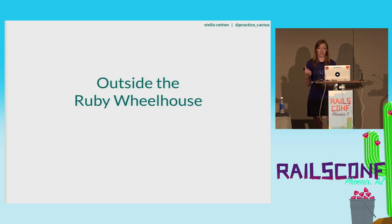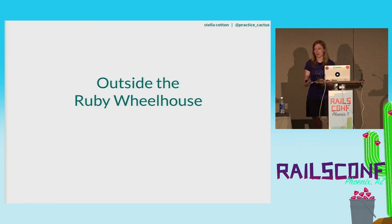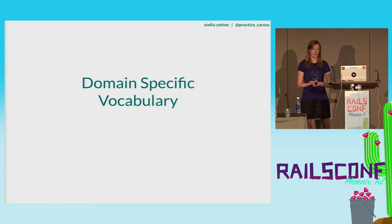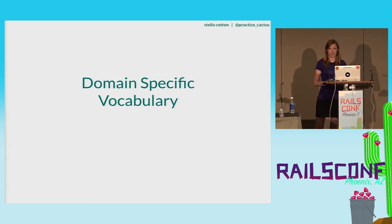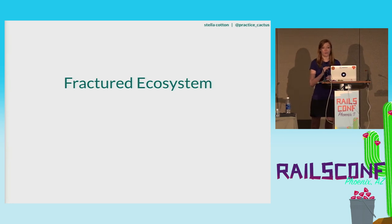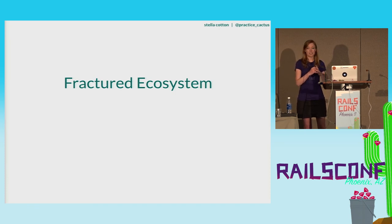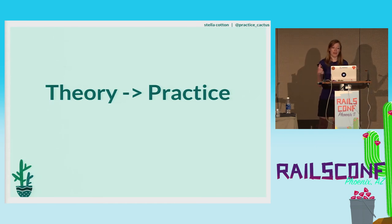A few different things make it tough to go from theory to practice with distributed tracing. First and foremost, it's kind of outside the Ruby wheelhouse — Ruby is not well represented in the ecosystem at large. Most people are working in Go, Java, or Python, and you're not going to find a lot of sample apps or implementations written in Ruby. There's also a lot of domain-specific vocabulary in the docs. And finally, the most difficult hurdle is that the ecosystem is extremely fractured and changing constantly because it needs to trace everything everywhere across frameworks and languages.